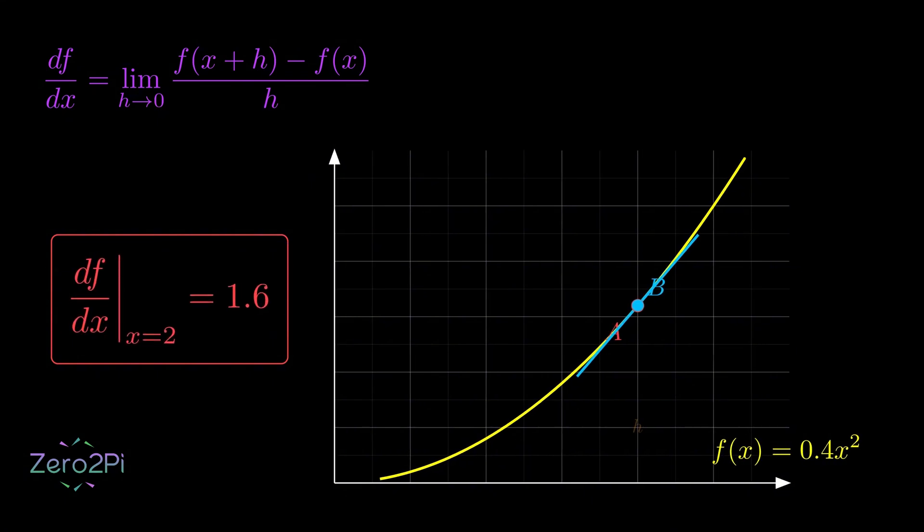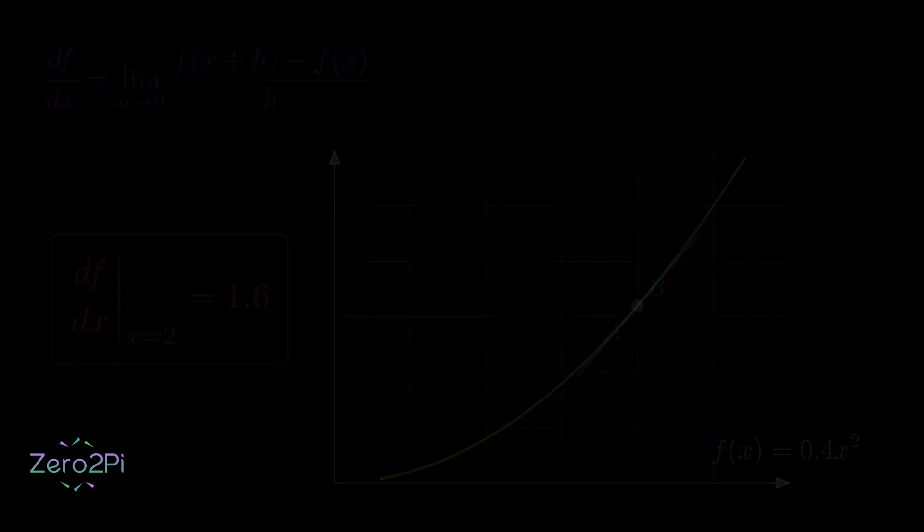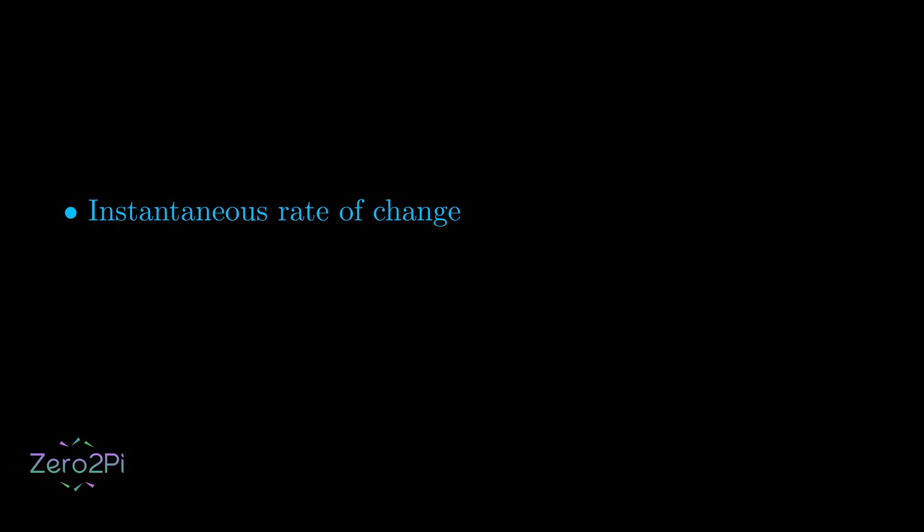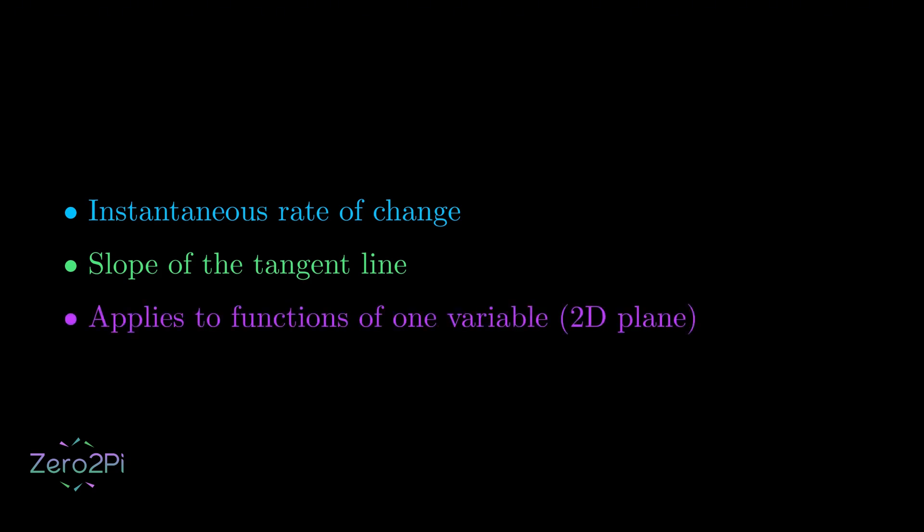To sum up what we have seen so far, we can confidently say these three key things. First, derivative is the instantaneous rate of change. Second, it is the slope of the tangent line to a curve. And third, it's something that applies to functions of a single variable living in a flat 2D world.